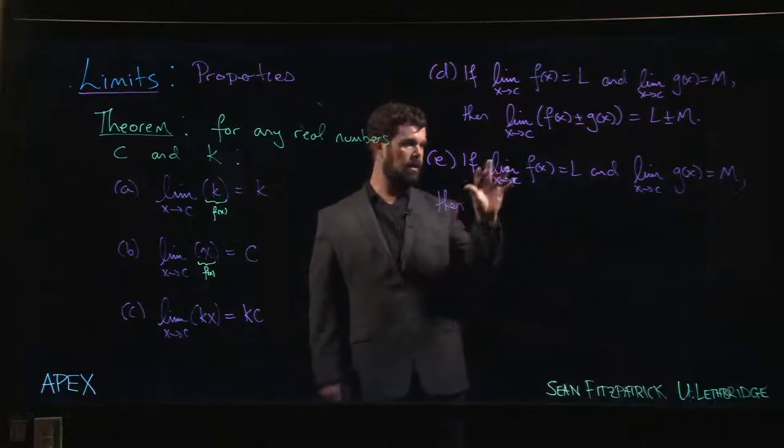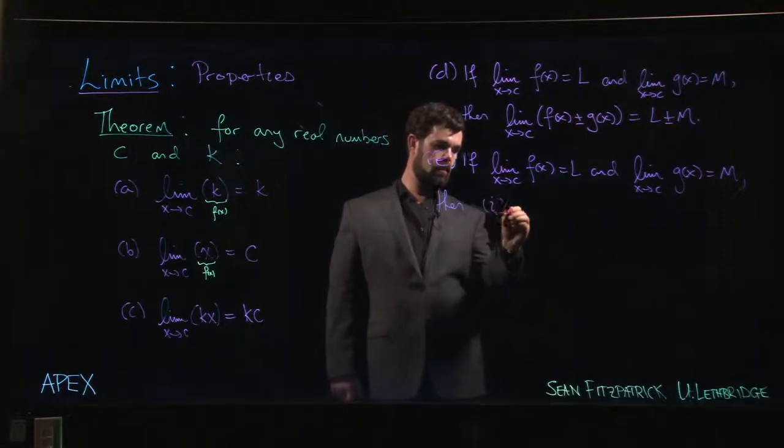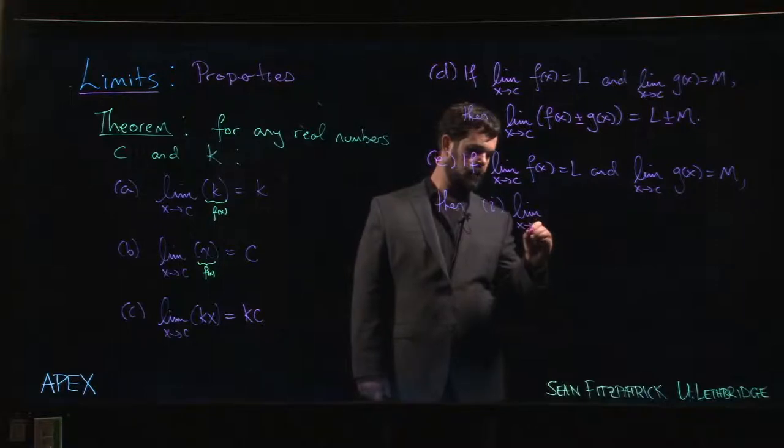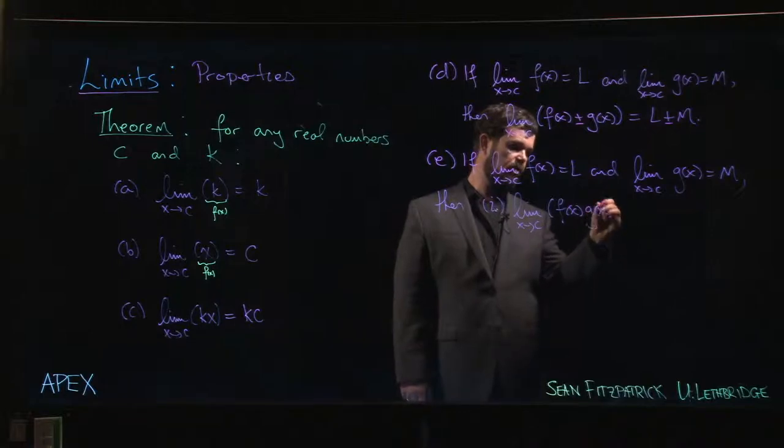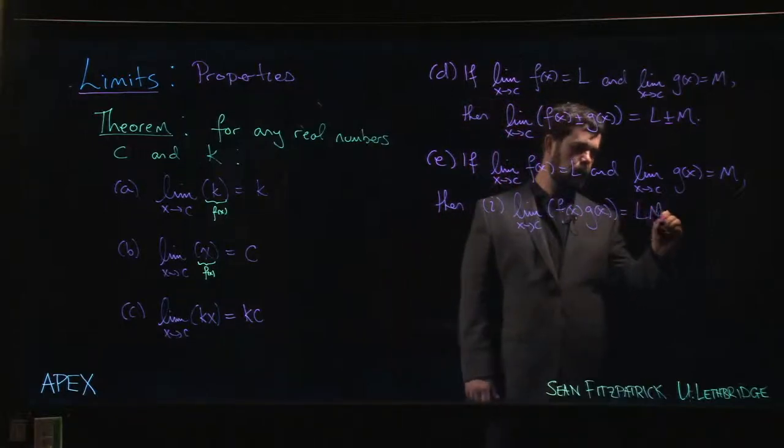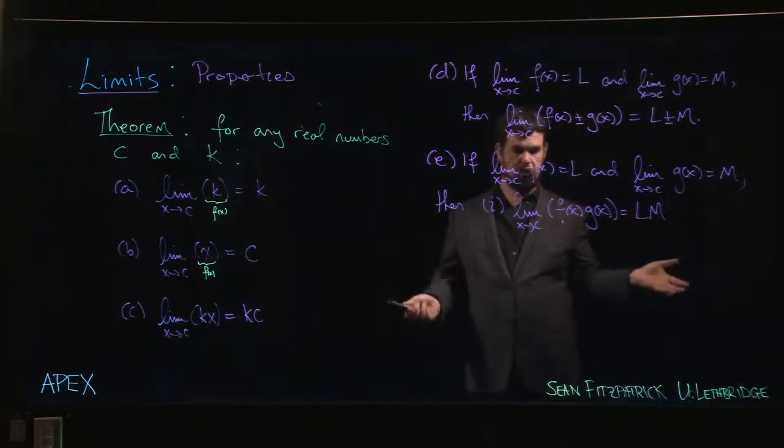So again, if f of x has limit L and g of x has limit M, then the limit as x goes to c of f of x times g of x is L times M. So limit of a product, product of the limits.